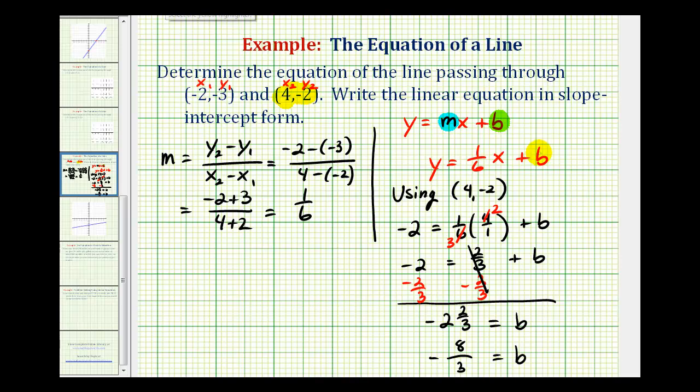So now that we know the value of b, using this equation here, we'll substitute negative eight-thirds for b. So the equation of our line would be y equals one-sixth x plus negative eight-thirds. But you normally won't see the linear equation written in this form. Plus negative eight-thirds is equivalent to subtracting eight-thirds. So you'll normally see the equation of the line written as y equals one-sixth x minus eight-thirds.